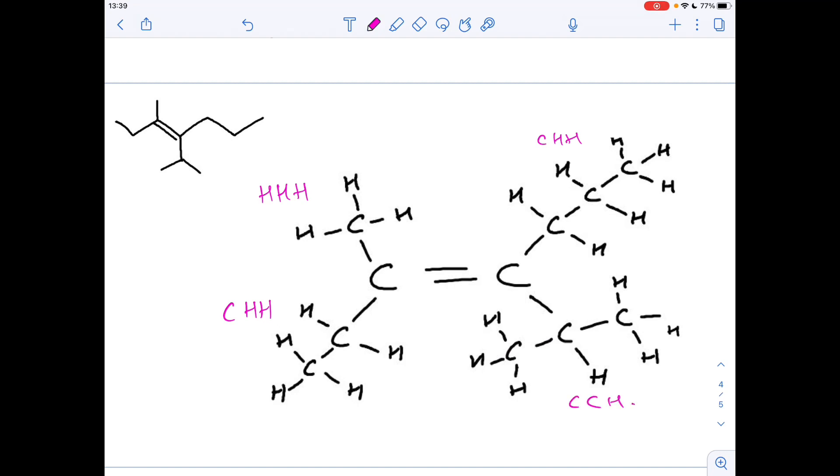So hopefully you can see that the lower one is going to be priority. So we've got that's the priority group on this carbon and that's the priority group on this carbon. So those priority groups are on the same side together, on the same side of the double bond, so this one is Z.